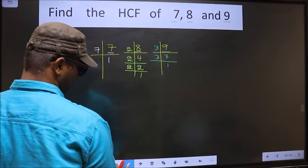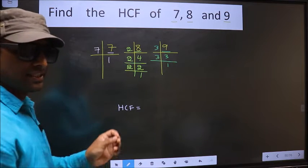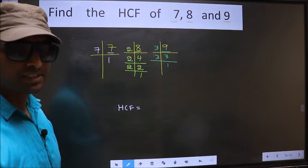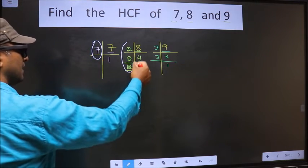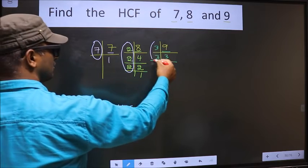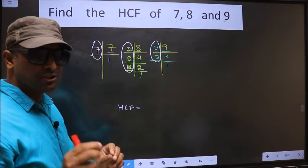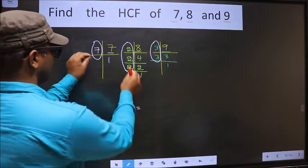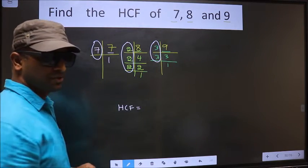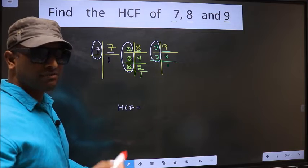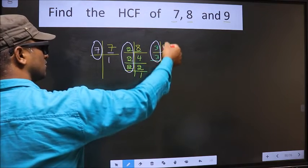So now our HCF is - HCF is the product of numbers which should be present in all 3 places. Here, here, and also here.